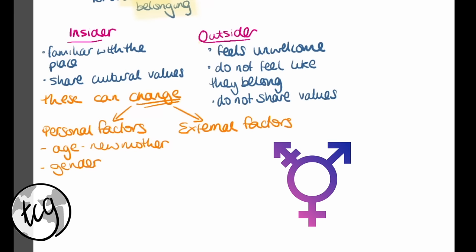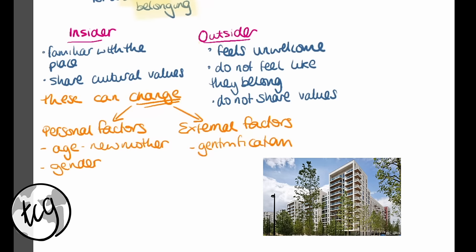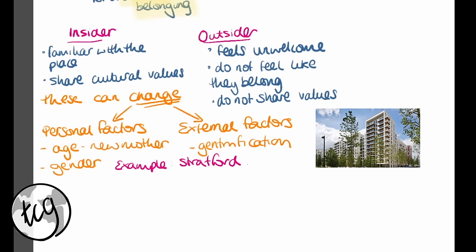External changes to a place can also change how people interact and use spaces. For example, new housing developments may encourage a new flow of populations and new services, which may mean someone now feels disconnected. If you've been living in an area a long time and then suddenly have a new influx of people or gentrification, you may feel like an outsider although you've lived there a really long time. It's good to have a few examples up your sleeve — for example, Stratford, where new populations moved in and people may feel like outsiders.